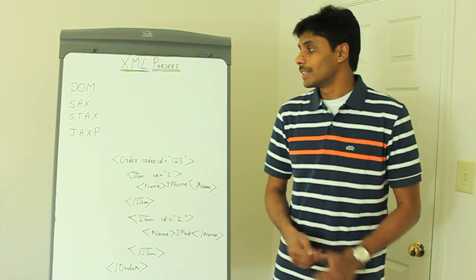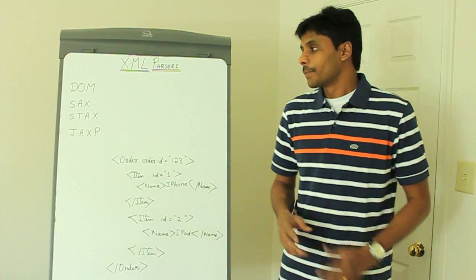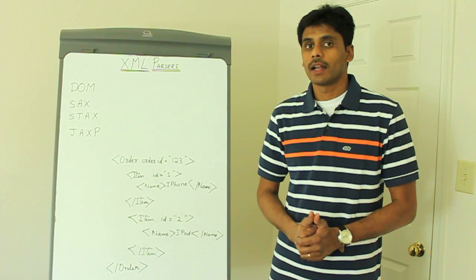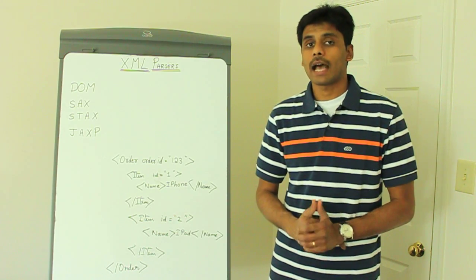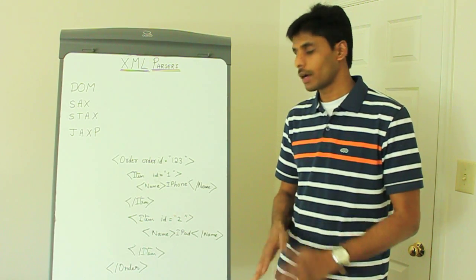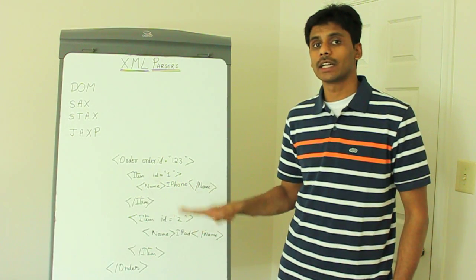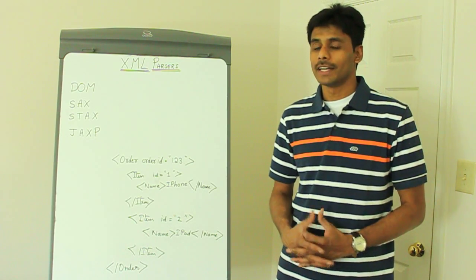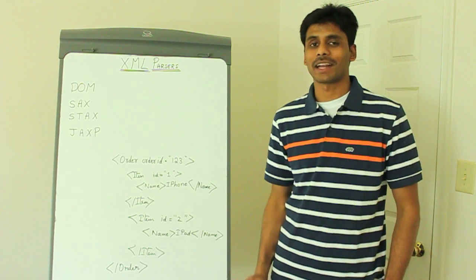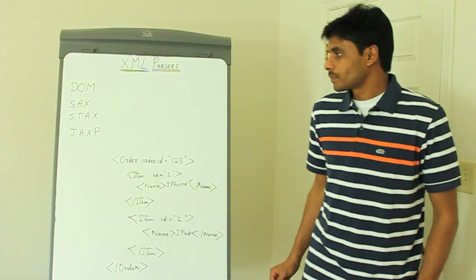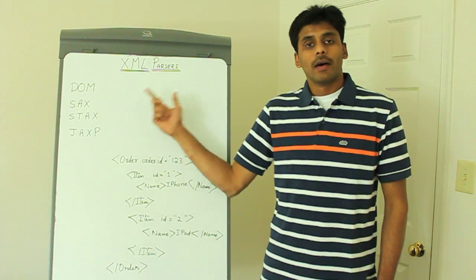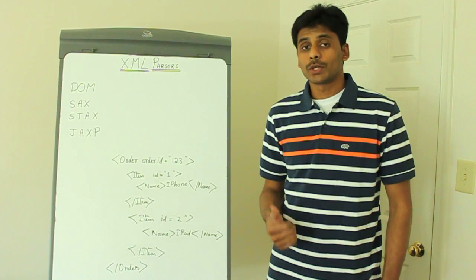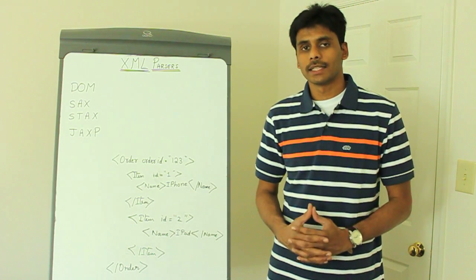That is exactly where the StAX parser comes to the rescue. StAX stands for Streaming API for XML parsing. The StAX API allows our application to explicitly ask for what we need from the XML document, and it doesn't load the entire XML document into memory. So it's like a hybrid of SAX and DOM, and it's a very popular XML API. StAX allows you to both read and write XML documents — so it's bi-directional, unlike a SAX parser — and it also allows you to read and write multiple documents at the same time.